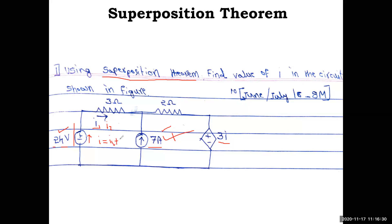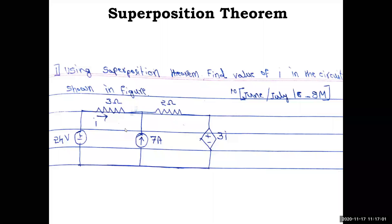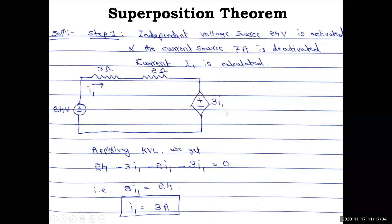Using the principle of superposition, the total current i = i1 + i2, where i1 corresponds to the 24 volt source active and i2 to the 7 amp source active. This has been proved in the superposition theorem — taking the total current equation and separate i1, i2 equations gives the same result. Now we follow step one: deactivate the 7 amp current source; the 24 volt source is activated and 7 amp is open-circuited.